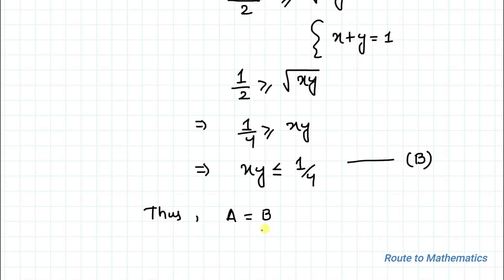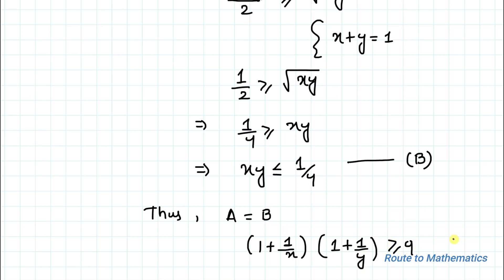Thus equation A equals equation B, and hence it is proved that (1 + 1/x) multiplied by (1 + 1/y) is greater than or equal to 9. I hope you have understood the solution. Thanks for watching — please subscribe to my channel and hit the like button for more such interesting videos. Thank you.